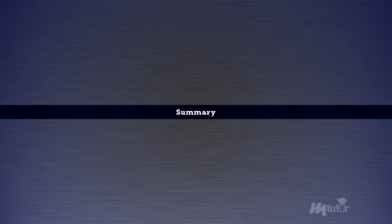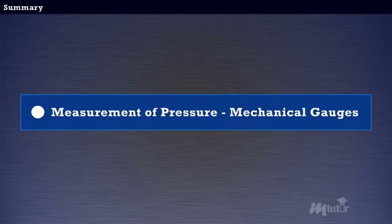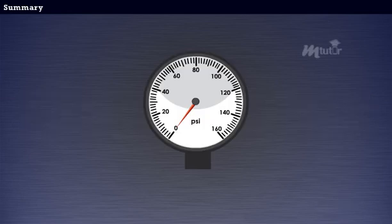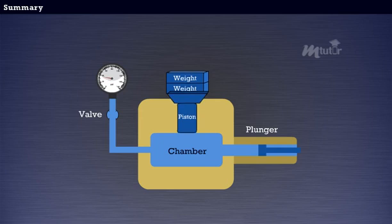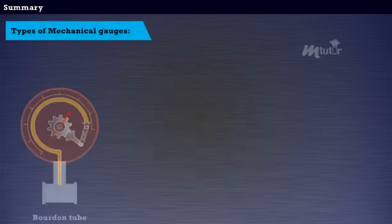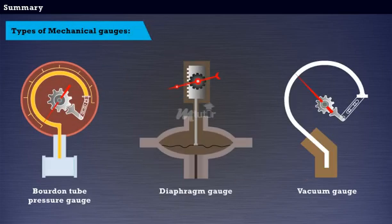Summary. This brings us to the end of the lesson. In this lesson, we have learnt about the measurement of pressure in mechanical gauges. Mechanical gauges are defined as devices used for measuring the pressure by balancing the fluid column by the spring or dead weight. Types of mechanical gauges and their working.